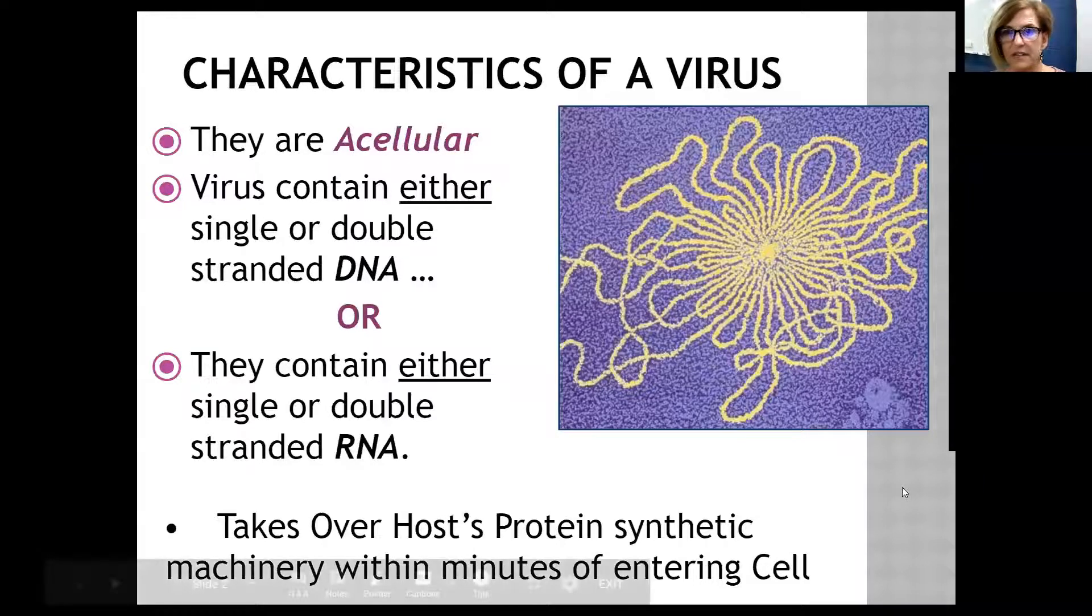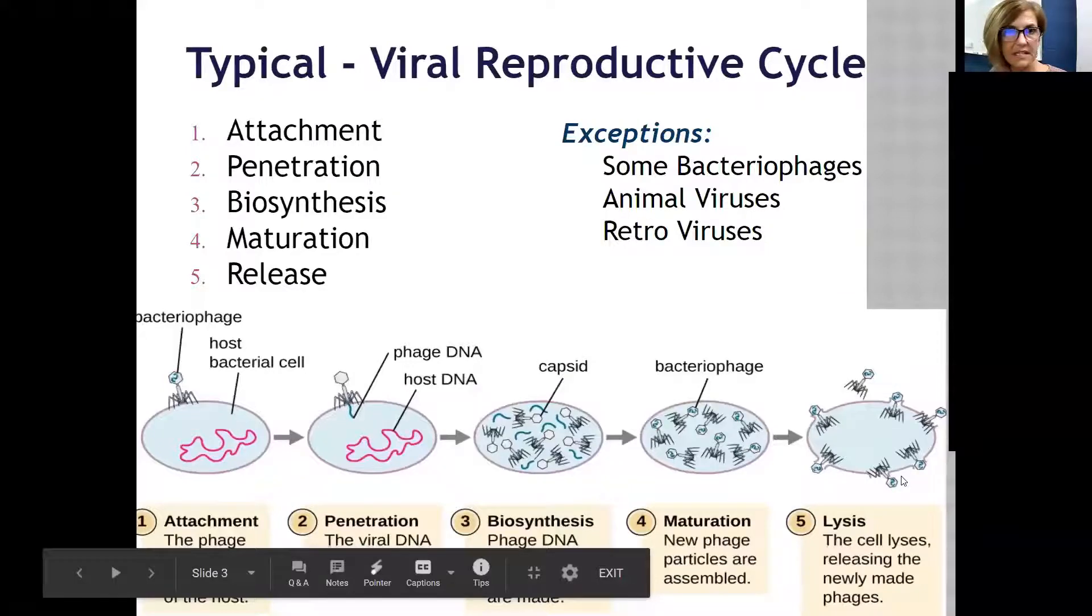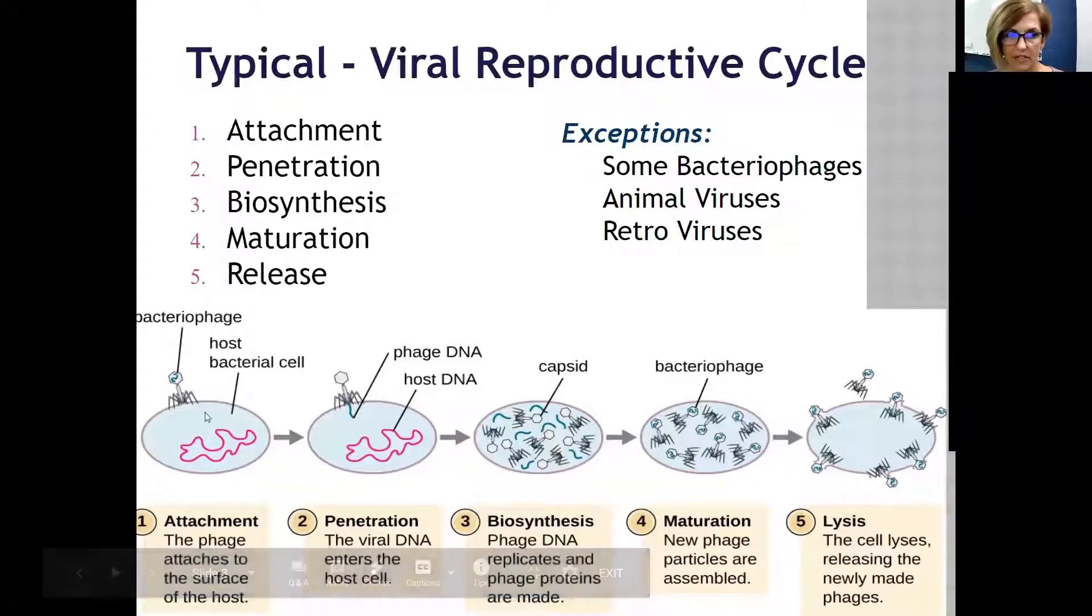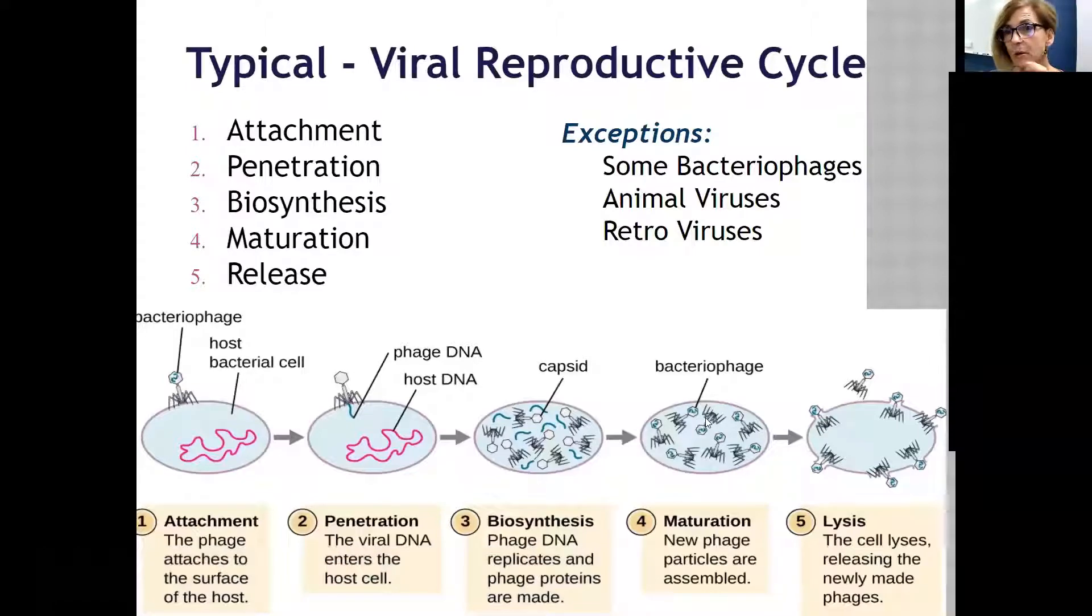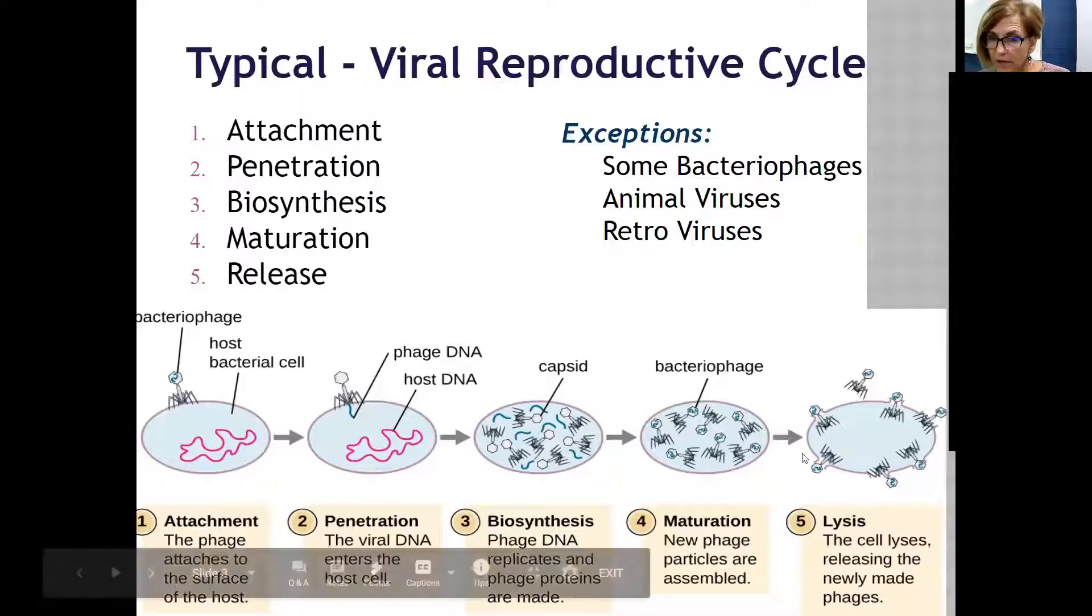There are two different life cycles, the lytic and the lysogenic. Typically, they all have these steps together: attachment, where the virus attaches to some receptor protein on the cell surface; penetration, injecting its genetic material into the cell; biosynthesis, where the cell is making the proteins needed to make more viruses; maturation, where those pieces are put together; and then release, where viruses are released from the cell and move out to affect other cells.